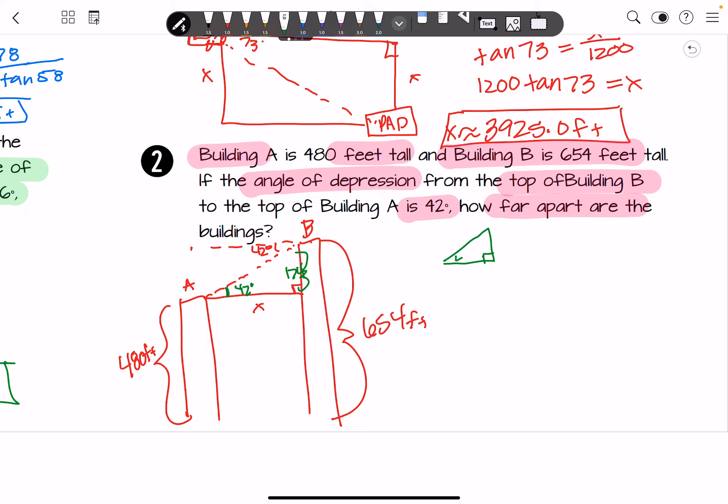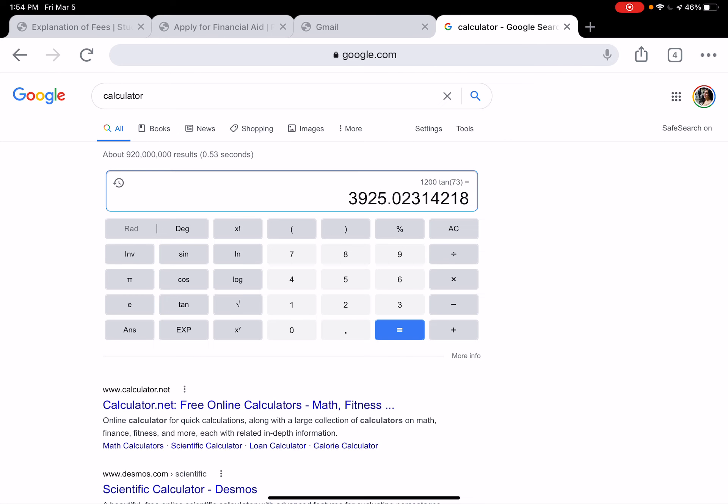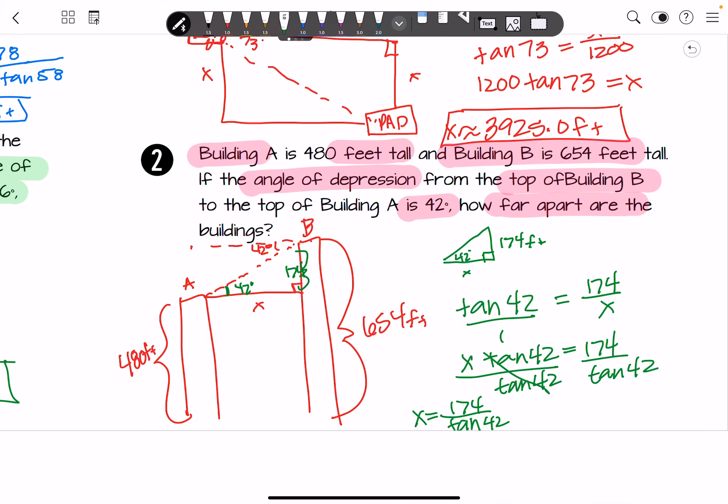So we're going to work with this triangle. We're looking for x, so that means we're going to have to use tangent because we've got our opposite over our adjacent. So we're going to do the tangent of 42 is equal to 174 over x. Cross multiply and you get x times the tangent of 42 is equal to 174. Divide both sides by tangent of 42. And so x is 174 over the tangent of 42. Put it in our calculator. We're going to do 174 divided by tangent of 42. And we get about 193.2 feet.